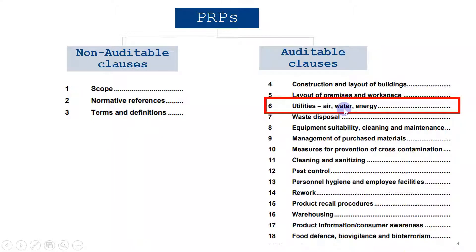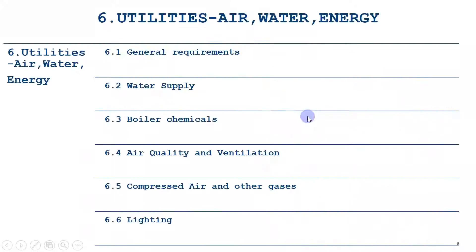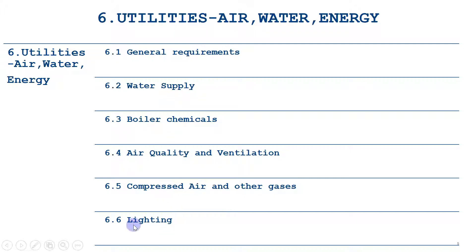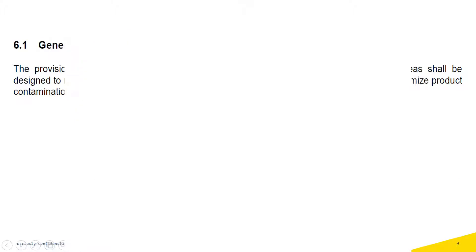PRP number six is utilities: air, water, and energy. It is subdivided into six further categories: water supply general requirement, water supply, boiler chemicals, air quality and ventilation, compressed air and other gases, and lighting.